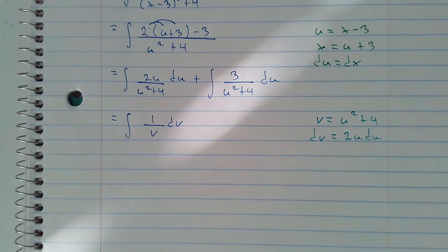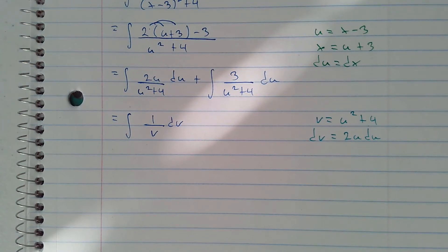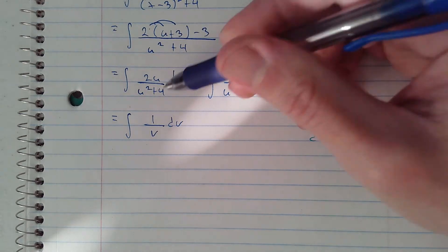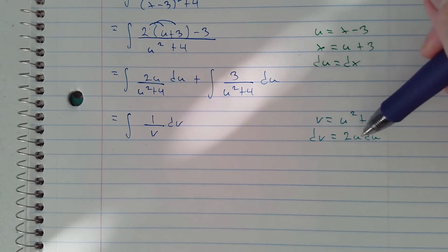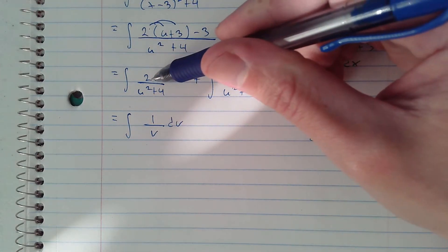Over here we'll get 1 over v, and dv is 2u du. That takes care of 2u du.